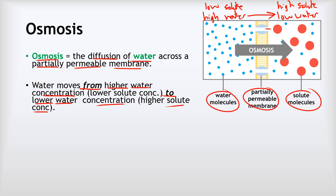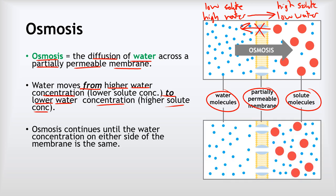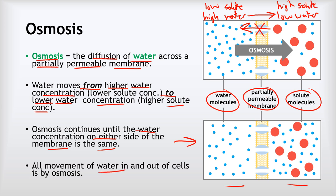The solute particles do want to diffuse from high to low concentration as well, but the trouble is they can't pass through the channels in the partially permeable membrane because they are too big. So it's only the water that is able to move. Osmosis will continue until the water concentration on either side of the membrane is the same — at that point osmosis stops. All movement of water in and out of cells is by osmosis, and osmosis is only ever to do with the movement of water. So any time you see a question about the movement of water in or out of cells, it's always a question on osmosis.